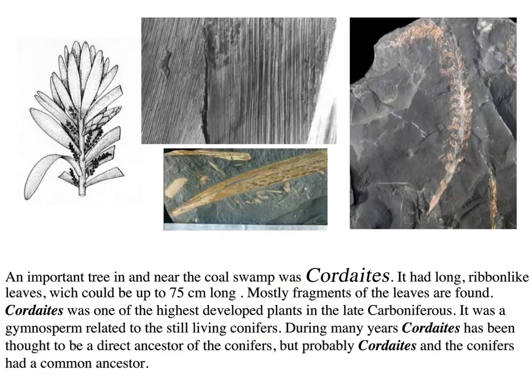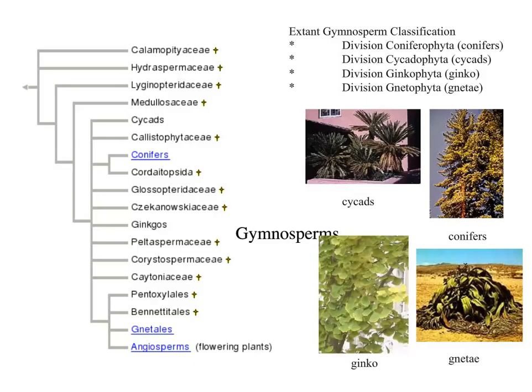One important tree worth noting from this period is the cordaites. These were interesting and related to gymnosperms, which still exist today. They had relatively long ribbon-like leaves, and some species basically formed a kind of mangrove forest while others grew in much drier places — so they had a pretty wide range and were pretty interesting looking plants.